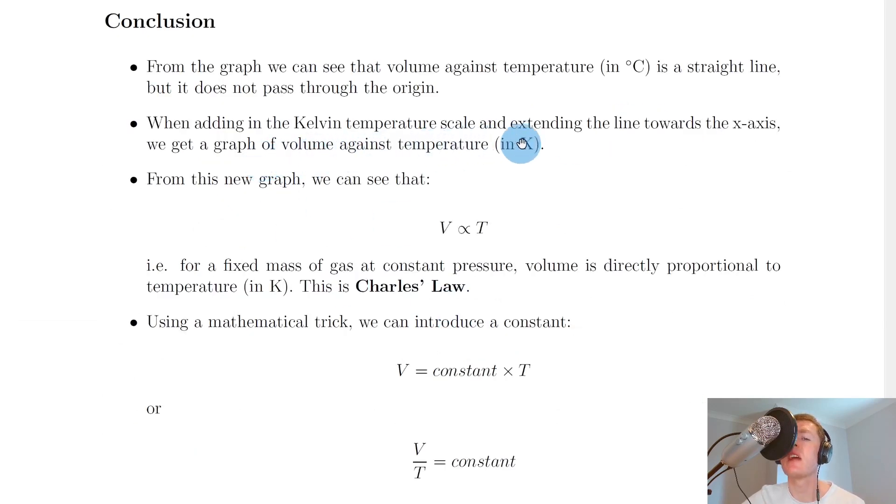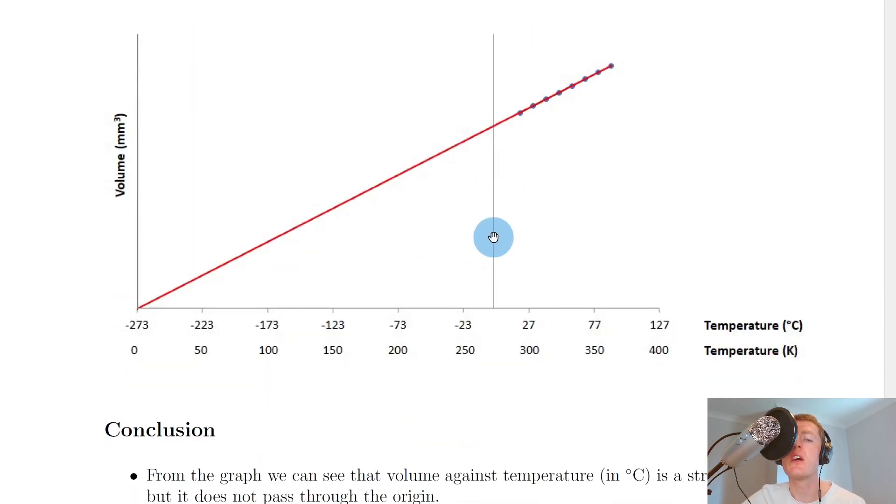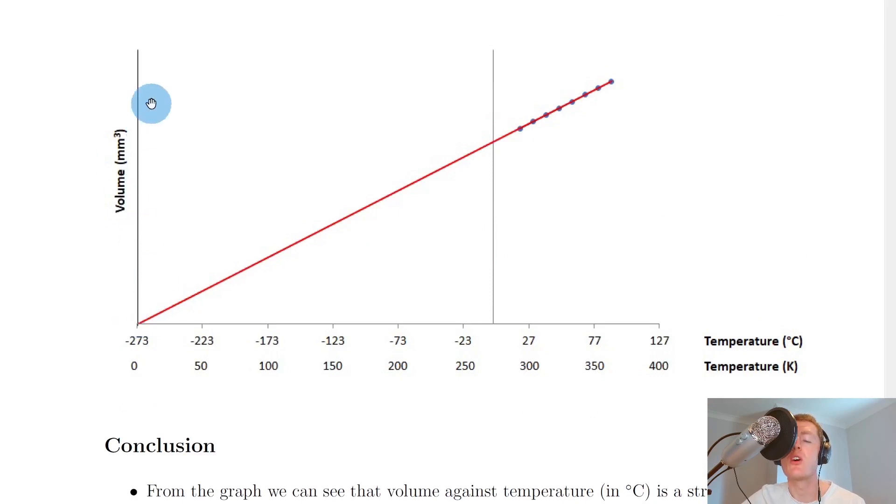However, when adding in the Kelvin temperature scale and extending the line towards the x-axis, we get a graph of volume against temperature in kelvin. From this new graph we can see that volume is directly proportional to temperature—volume on the y-axis is directly proportional to temperature in kelvin on the x-axis because it's a straight line that passes through the origin.